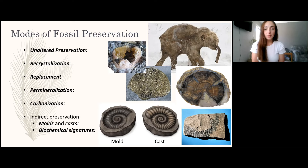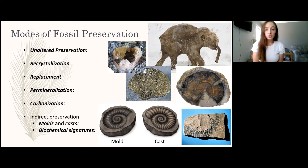Molds and casts: a mold is basically an impression of a fossil, and a cast is the filled-out version. Casts aren't made with original fossil material — they're made by way of mold formation through the dissolution of the actual fossil material, and then sediment or other minerals that precipitate out of solution fill that mold, forming a cast.